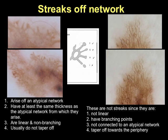Streaks of the network are depicted in the images on the left, where streaks arise from an atypical network. They have the same thickness as the atypical network, are linear and non-branching, and do not taper off towards the periphery. The image on the right is that of a reticular nevus. The lines seen here are not streaks since they are not linear, have branching points, are not connected to an atypical network, and taper off towards the periphery.